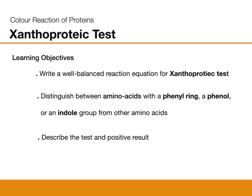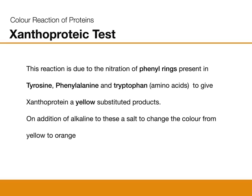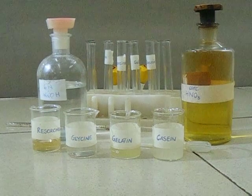This test is used to distinguish amino acids with a phenyl ring, a phenol group, and an indole group from other amino acids. This reaction is due to the phenyl rings present in amino acids tyrosine, phenylalanine, and tryptophan, which give xanthoproteins — yellow substituted products. On addition of alkali, salts are formed, changing the color from yellow to orange.